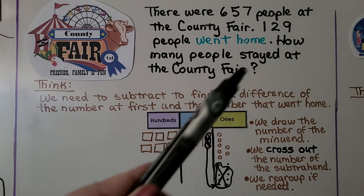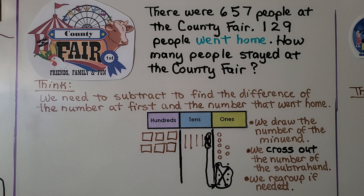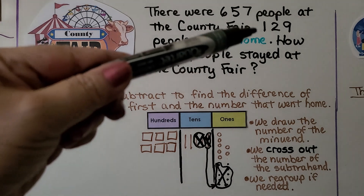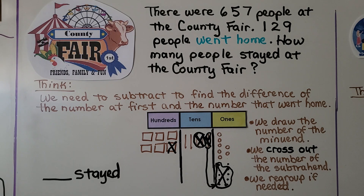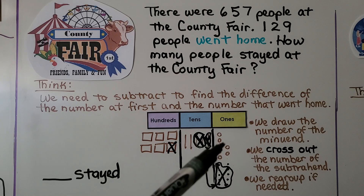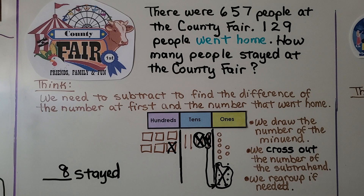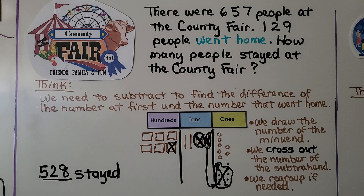We need to take away 2 tens — we circle and cross off 2 tens. We need to take away 100 — we cross off that 100. Now we count how many are left: 8 ones, 2 tens, 5 hundreds. We know 528 people stayed at the county fair.